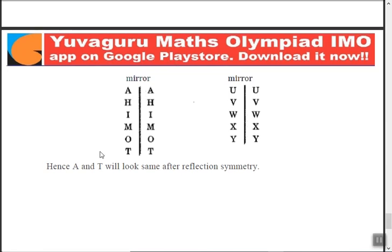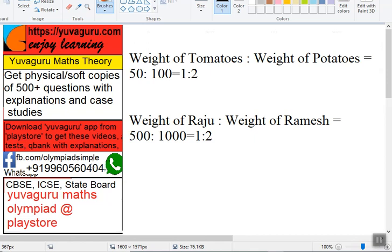We have a few more videos on symmetry theory — bilateral symmetry and radial symmetry — you can check those too. Only basics were covered here. On the Guru Maths Olympiad app, available on the Play Store, you'll get all problems related to symmetry and other maths topics from fifth to tenth standard, including theory lectures, test question banks with explanations, and 500-plus questions with case studies. Follow us on Facebook or WhatsApp us for any purchase queries. Keep studying, keep watching — thanks!